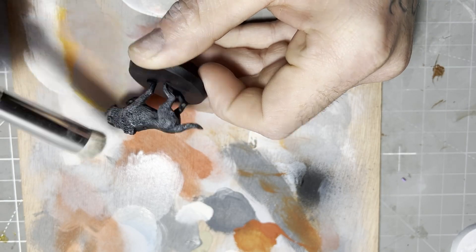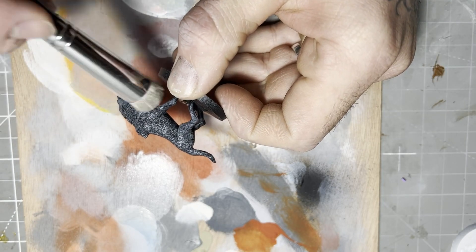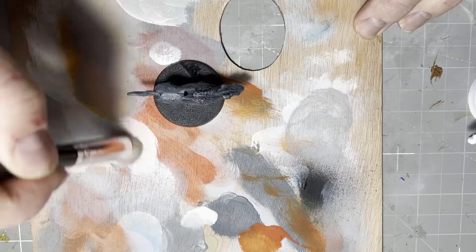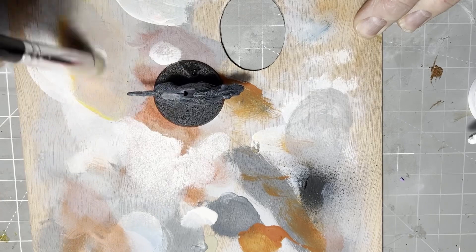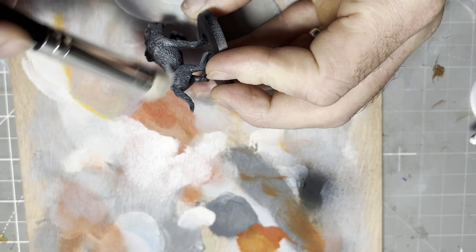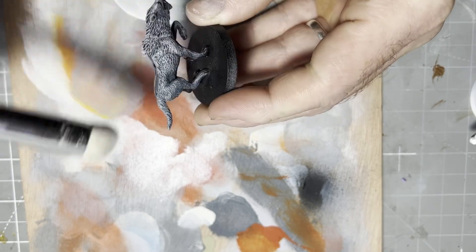For the Mordor Warg, we'll begin by priming the model black, then giving it an all-over dry brush of Miskatonic Grey, followed by another dry brush of Purity White along the higher edges. This way, when we apply the speed paint, we get contrast in the colors.